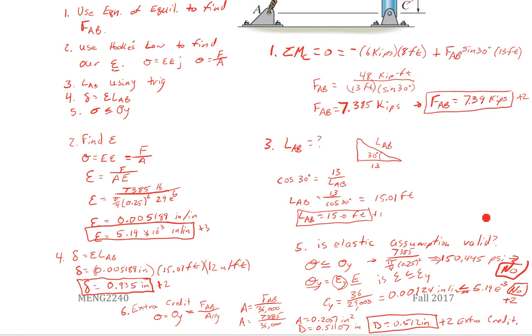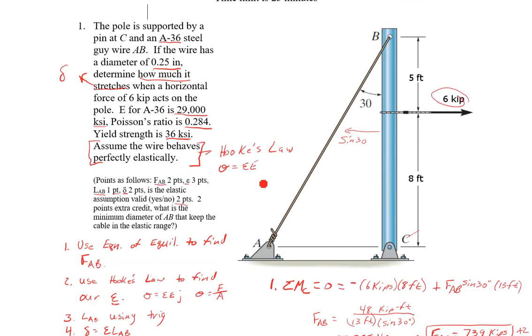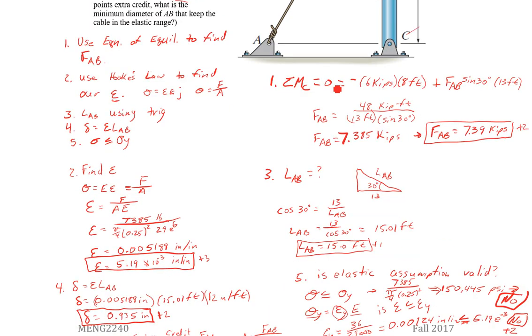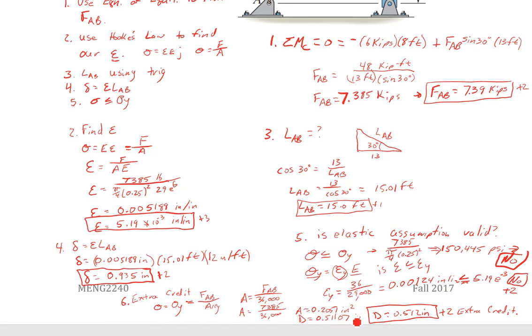So hopefully that makes a little more sense talking through it, showing our work as we went through. We needed the equation of equilibrium and we need to remember Hooke's law and relating that to our general definition of stress as force over area. A little trig, pretty easy there to get the one point. Then our deformation is our epsilon times our original length, and then finally validating that assumption. And then if we wanted extra credit you can solve for that required diameter.